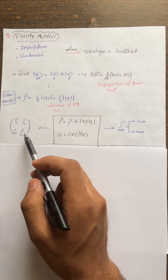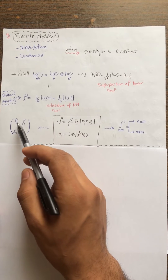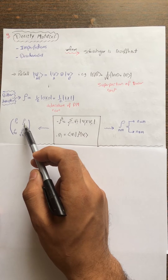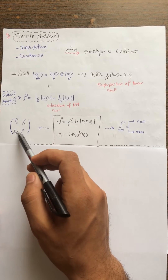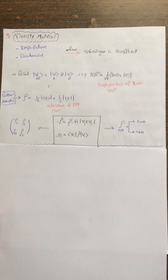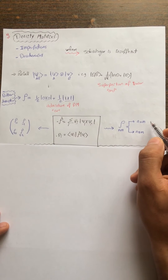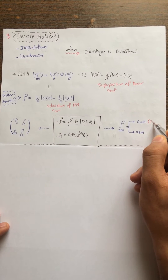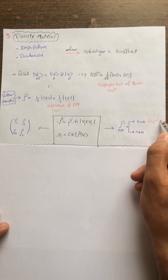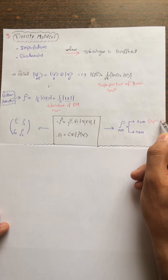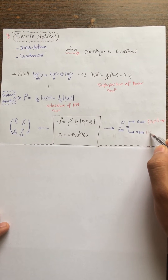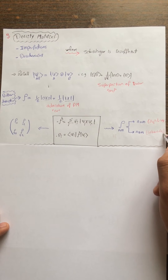The density matrix for a two-by-two system has elements ρ₁₁, ρ₂₂ on the diagonal and ρ₁₂, ρ₂₁ as off-diagonal elements. The diagonal elements are actually related to the populations, and the off-diagonal elements are related to what we call the coherences — we will discover this.